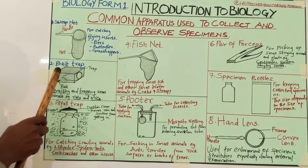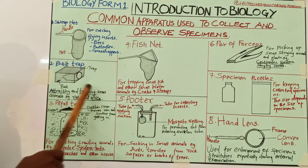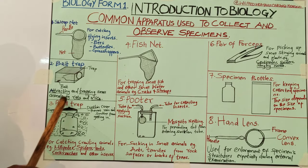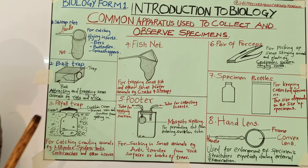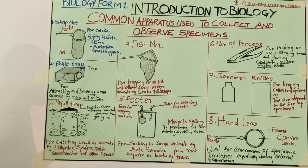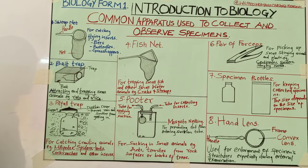The function of the bait trap is for attracting and trapping small animals, for example rats and mice. It will be very wrong if you don't say 'attracting.' If you just say 'trapping,' it is wrong. So you have to say attracting and trapping small animals, for example rats and mice.